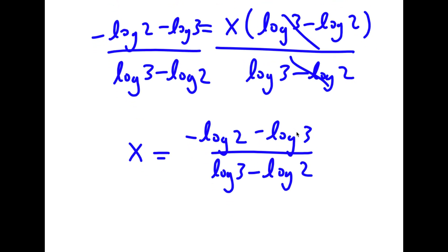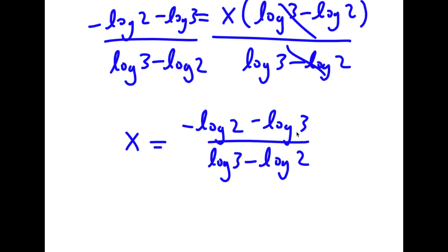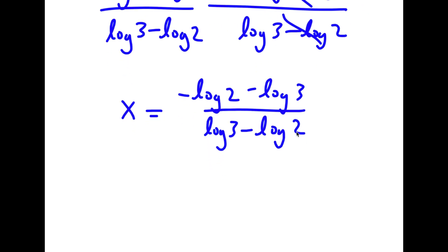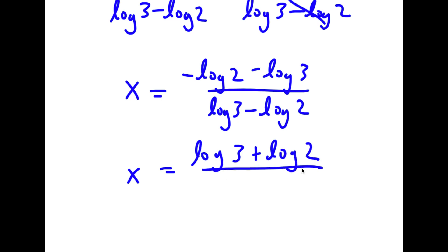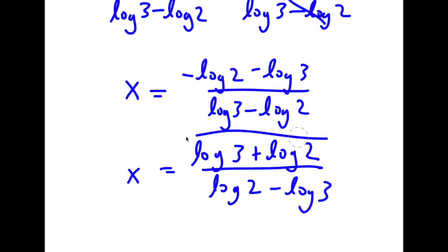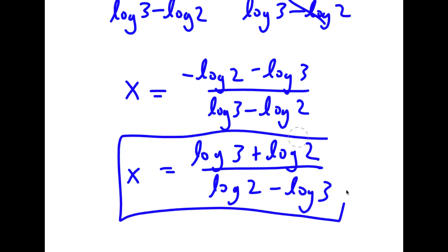If I multiply both numerator and denominator by negative 1, I get x is equal to log 3 plus log 2 over log 2 minus log 3. So this is my answer.